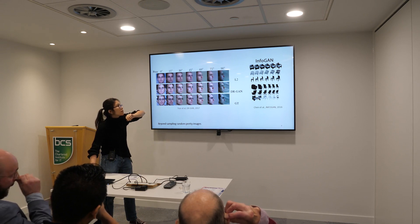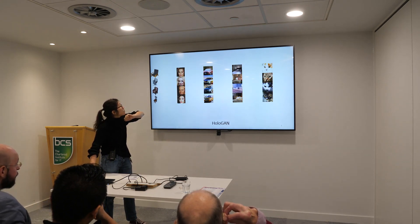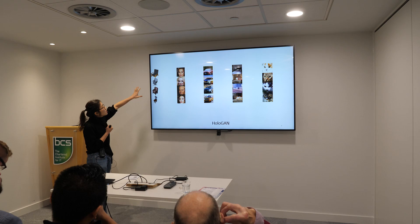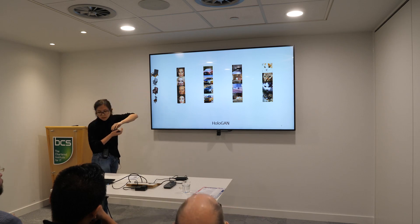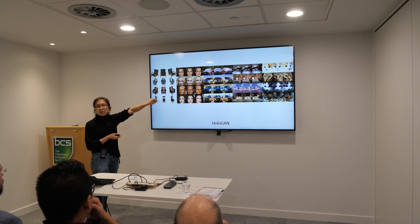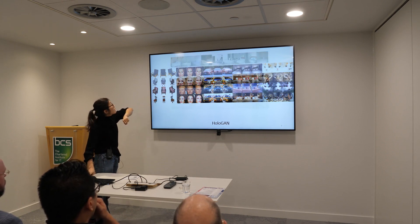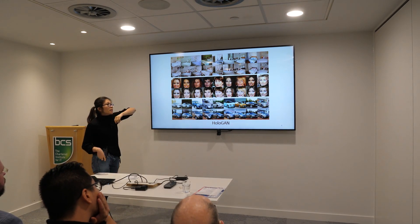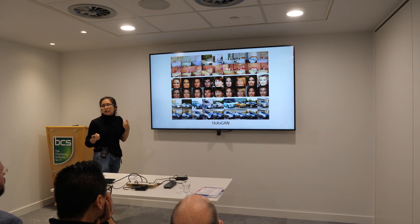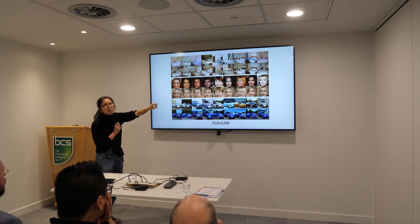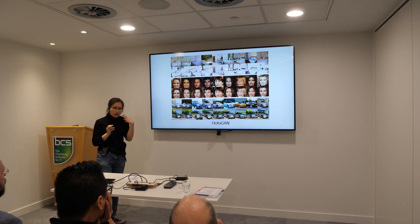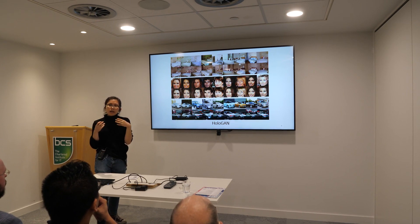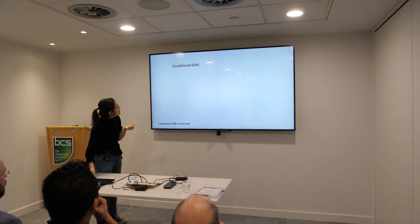So we propose HoloGAN, which is still an unsupervised model. In addition to generating nice pictures, you can now control the poses and also the color or appearance of the images you're generating — and we do all of this without using any labels. We train this network using only images, no multi-views, no pairs — just a random collection of images.